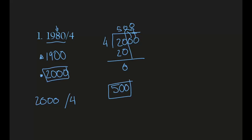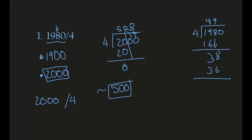But 500 is not our final answer — that is approximately our answer. Whatever our actual answer is going to be, it will be close to this number. Now let's actually divide 1,980 by 4. 4 times 4 equals 16. We subtract: 9 minus 6 is 3. We bring the 8 down — we have 38. 4 times 9 is 36. After subtracting: 3 minus 3 is 0. Now the 0 comes down. 4 times 5 equals 20. No remainder. Our answer is 495.